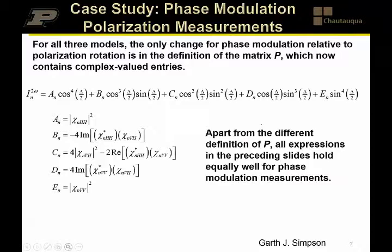If you want to do phase modulation, which we like to do because it's much faster than polarization rotation and therefore results in a significant reduction in 1 over F noise, the math is identical. In fact, the only thing that changes is the definition of P, which we haven't even gone through. But basically,